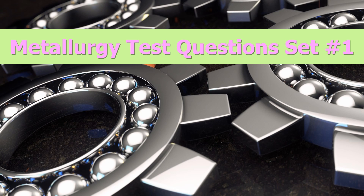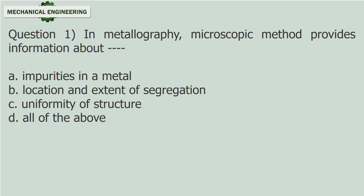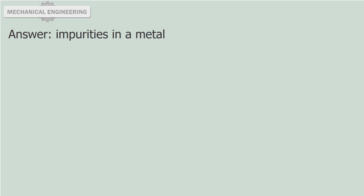Metallurgy Test Questions, Set No. 1. Question 1: In Metallography, the microscopic method provides information about — (fill in the blank). A. Impurities in a metal. B. Location and extent of segregation. C. Uniformity of structure. D. All of the above. Answer: Impurities in a metal.